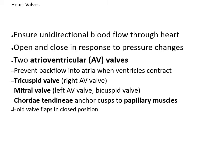Heart valves ensure unidirectional flow of blood through the heart, opening and closing in response to pressure changes. The two atrioventricular valves prevent backflow of blood into the atria when the ventricles contract. The tricuspid valve is the right AV valve with three flaps, and the mitral or bicuspid valve is the left AV valve with two flaps. The cordae tendinae anchor those valve flaps to papillary muscles so they don't blow back into the atria when the ventricles contract.